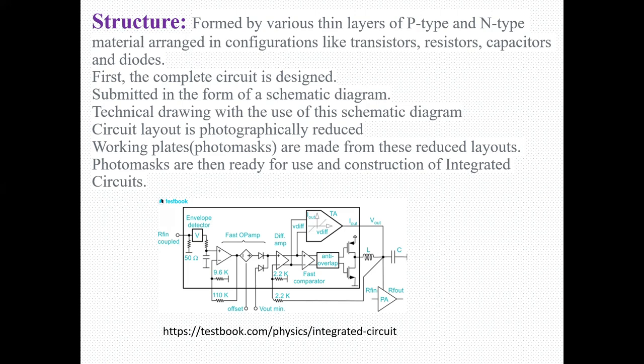First, the complete circuit is designed and then submitted in the form of a schematic diagram. Technical drawing with the use of this schematic diagram is done. Circuit layout is photographically reduced. Working plates or photomasks are made from these reduced layouts. Photomasks are then ready for use and construction of ICs. See this image.